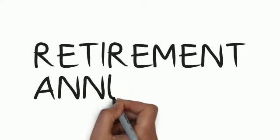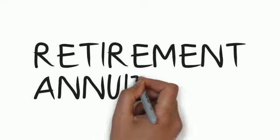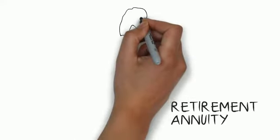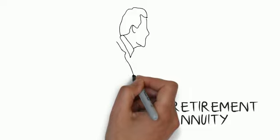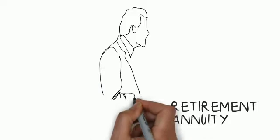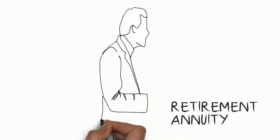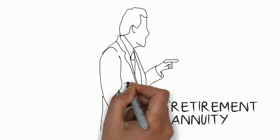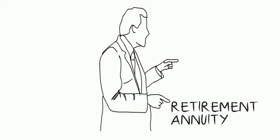A retirement annuity is in many ways not just an annuity — it's also a savings contract. When people say we are selling you a retirement annuity, what they are really saying is: we are selling you a savings contract until the date of retirement, and then when you retire, we are going to sell you an annuity. So it's important to understand the context of a retirement annuity being a savings contract which is going to be used to pay for a retirement annuity.